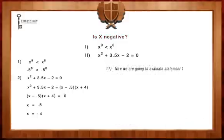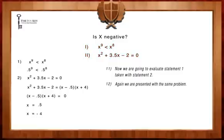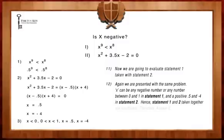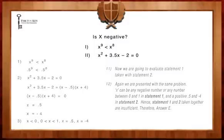Now, we are going to evaluate statement 1 taken with statement 2. Again, we are presented with the same problem. X can be any negative number or any number between 0 and 1 in statement 1, and a positive 0.5 or a negative 4 in statement 2. Hence, statement 1 and statement 2 taken together are insufficient. Therefore, the answer is E.